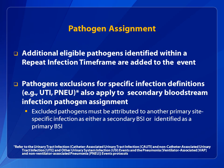The final topic to cover is the assignment of pathogens when reporting infections. If additional pathogens are identified within an RIT and found to be associated with the event, those pathogens are added and a new infection is not reported. It's important to note that some infection types have pathogen exclusions. For example, certain designated organisms are not available for meeting the infection criterion for UTI and pneumonia definitions. Pathogens excluded from specific infection definitions cannot be assigned as secondary BSI pathogens. Excluded pathogens must be attributed to either a secondary BSI for another site-specific infection or a primary BSI. For details related to excluded pathogens, refer to the UTI and pneumonia protocols.